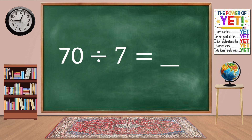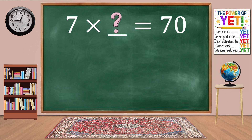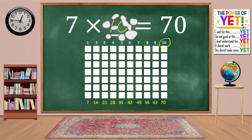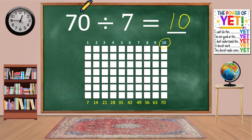70 divided by 7 equals blank. Our related fact is 7 times what equals 70? Skip count: 7, 14, 21, 28, 35, 42, 49, 56, 63, 70. We have ten columns. 7 times 10 equals 70. 70 divided by 7 equals 10.